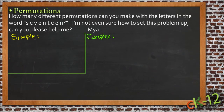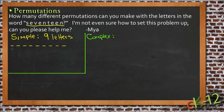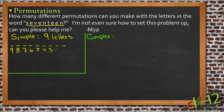I've broken up the screen so I can deal with them individually. The simple answer is that there are nine letters in 'seventeen,' so if we have nine letters then we have nine spaces to fill. For the first space in the new word we're going to build, we have any of those nine choices. But once we've picked a letter for that position, there are only eight remaining choices for the second position, then seven for the third, then six, five, four, three, two.